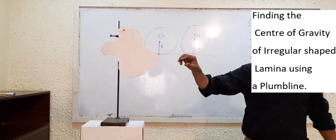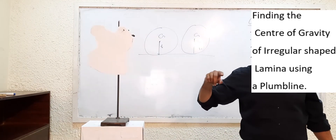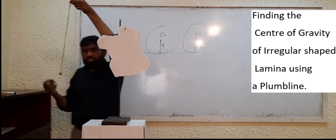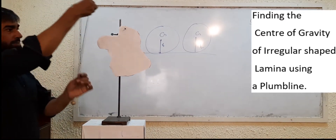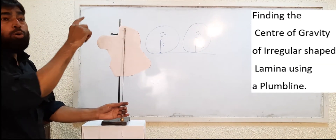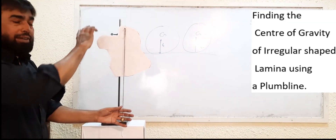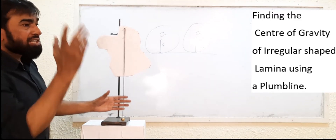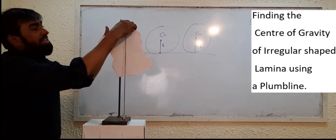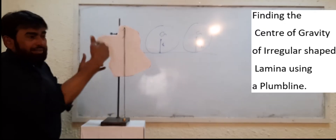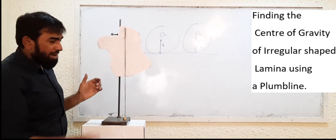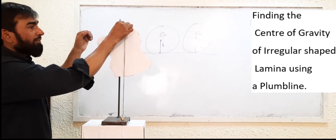The lamina must be suspending freely with minimum friction. I then suspend the plumb line weight here. I made the hole anywhere near the edges — not in between. It is very important to make the hole near the edges.